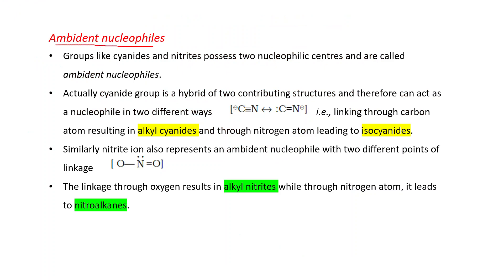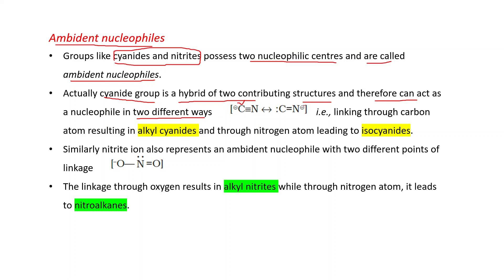Ambident nucleophiles: groups like cyanide (CN⁻) and nitrite (NO₂⁻) possess two nucleophilic centers and are called ambident nucleophiles. The cyanide group is a hybrid of two contributing structures — it can act through carbon (giving alkyl cyanide) or through nitrogen (giving isocyanide). Similarly, nitrite ion has two points of linkage: attack through oxygen gives alkyl nitrite, while attack through nitrogen gives nitroalkane.